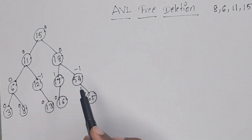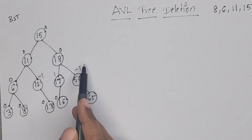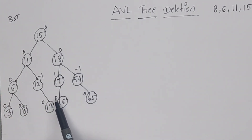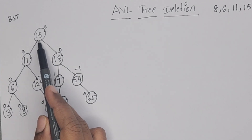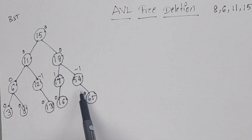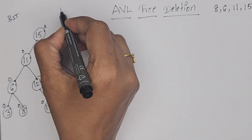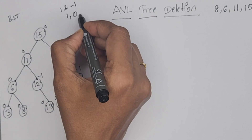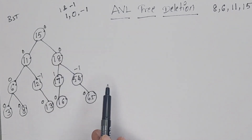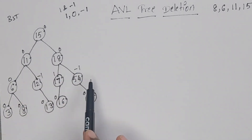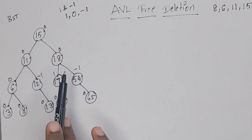Briefly, I will tell you what is an AVL tree. It is a self-balanced binary search tree. In a binary search tree, left subtree elements are less than root, and right subtree elements are greater than root. Every node is associated with a balance factor, calculated as left subtree height minus right subtree height. The balance factor should be between 1 and minus 1 — it can be 1, 0, or minus 1. Other than these three values, the tree is unbalanced and we have to balance it with the help of rotations.